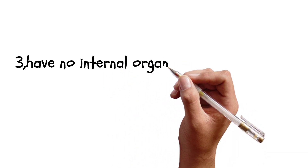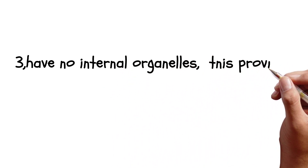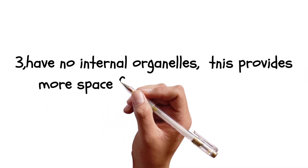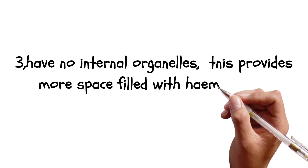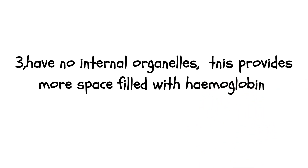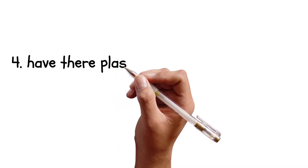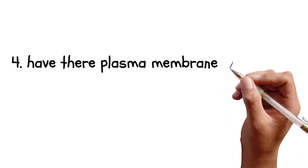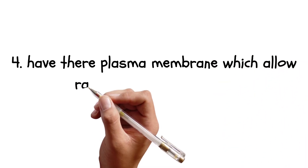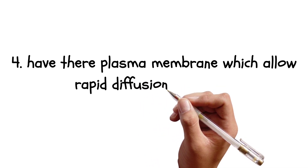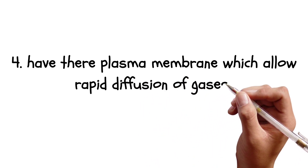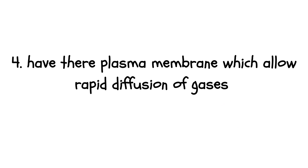Number three: they have no internal organs, and this provides more space to be filled with hemoglobin. Due to the fact that they don't have internal organs such as the cytoplasm organelles, Golgi bodies, and vacuoles, this helps the cell to be filled with hemoglobin, which is more important than those organs. They also have a plasma membrane which allows the rapid diffusion of gases.